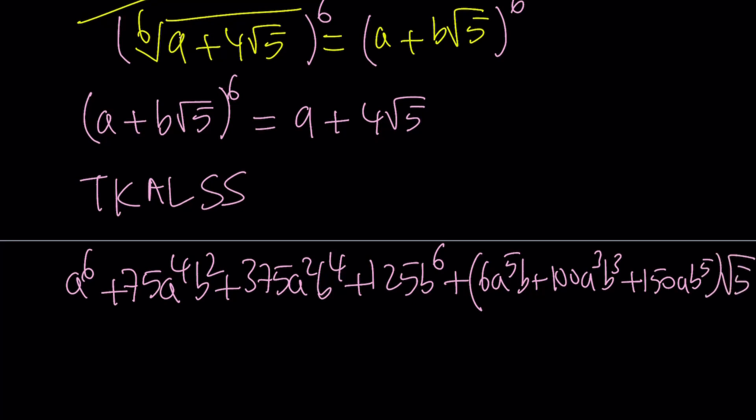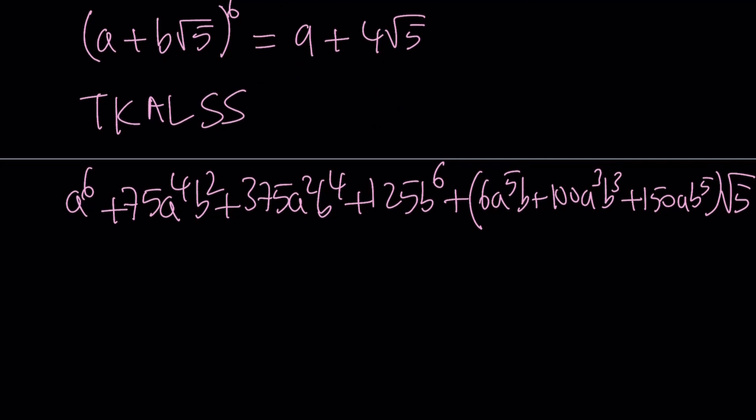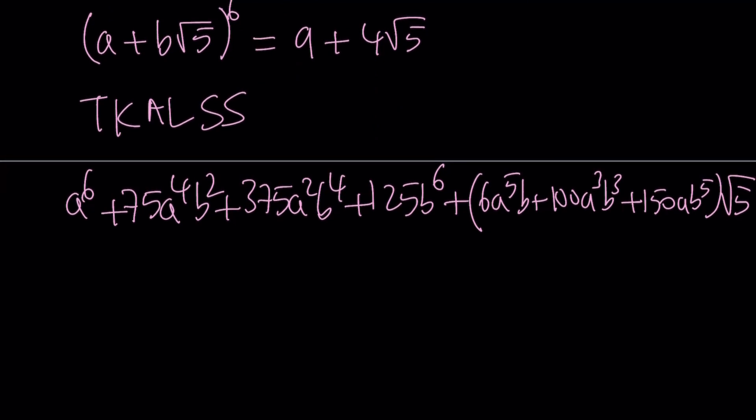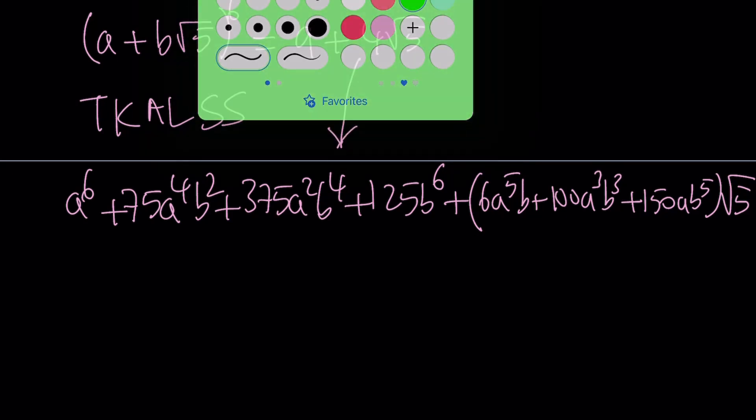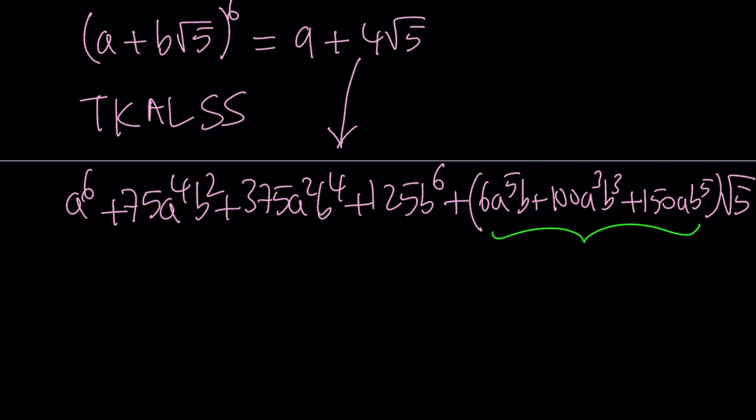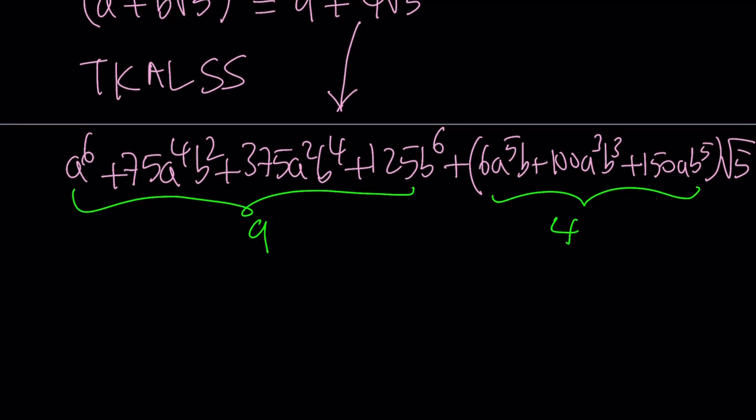Because some of these terms are going to have root 5 and some of them are not, because when you raise root 5 to an even power, you're going to get an integer. Now by comparing this to 9 plus 4 root 5, we notice that the coefficient of root 5 needs to be 4, and the other term here must be equal to 9.